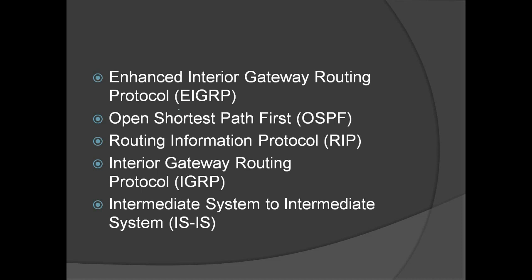Here are examples of dynamic routing protocols: EIGRP or Enhanced Interior Gateway Routing Protocol, OSPF or Open Shortest Path First, RIP or Routing Information Protocol, IGRP or Interior Gateway Routing Protocol, and IS-IS or Intermediate System to Intermediate System. These are examples of dynamic routing protocols that you can configure, especially on Cisco devices.